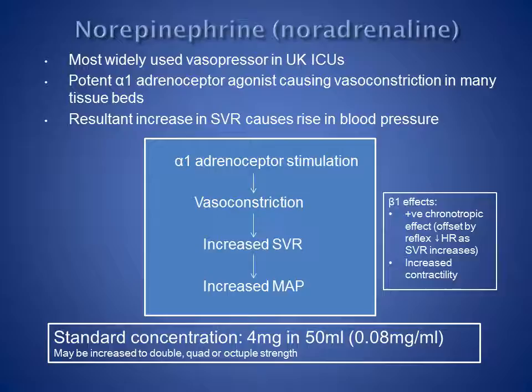Norepinephrine, or noradrenaline, is the most widely used vasopressor in UK ICUs. It's a potent alpha-1 adrenoceptor agonist, causing vasoconstriction in many tissue vascular beds. The resultant increase in systemic vascular resistance causes blood pressure to rise, and it is widely used in conditions like sepsis. Noradrenaline also has beta-1 effects — it causes some increase in contractility and has a positive chronotropic effect in isolation, but in vivo this is offset by the reflex reduction in heart rate that occurs as SVR and blood pressure increases.